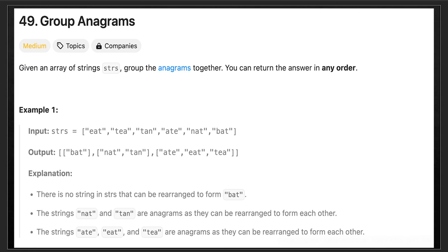Anagram grouping is also very well known in machine learning, specifically in natural language processing, where it is used in spell checking. Whenever you use Grammarly or spell check in your presentations, anagram grouping helps identify various word variations and checks spelling. Sentiment analysis also uses it to improve text clarification.